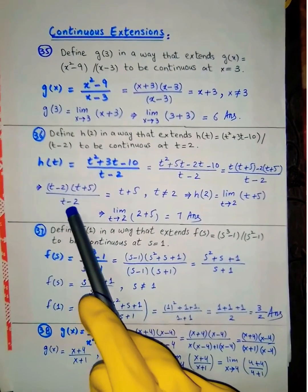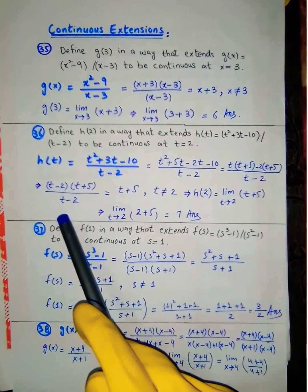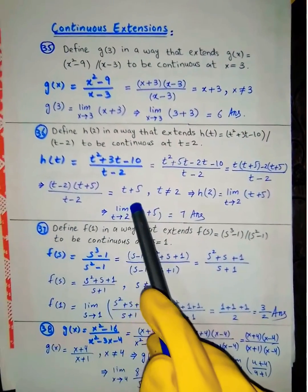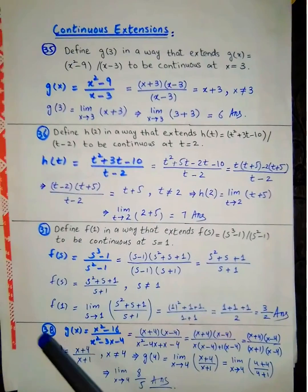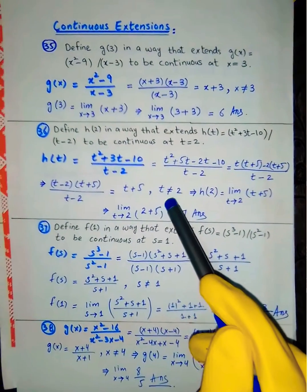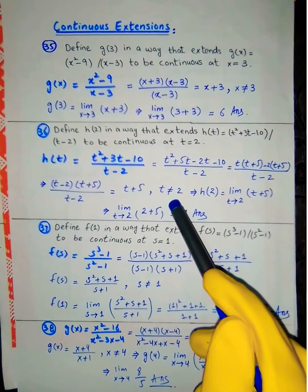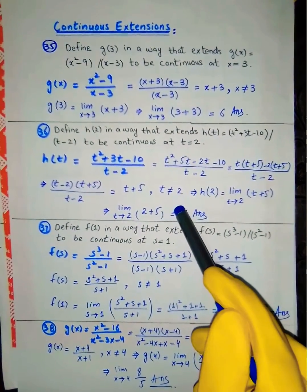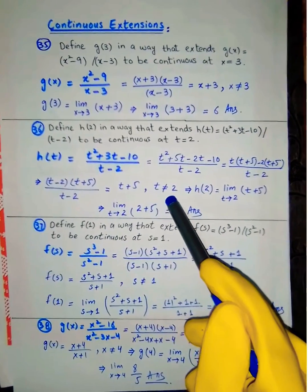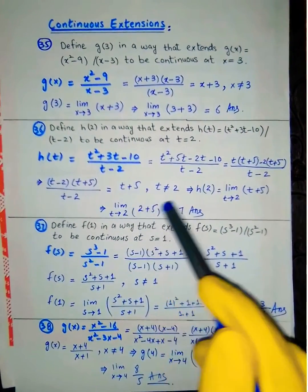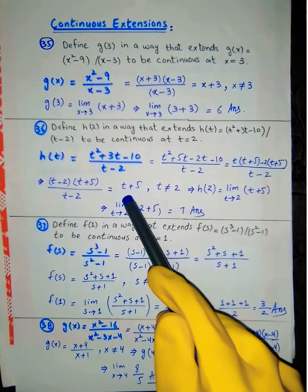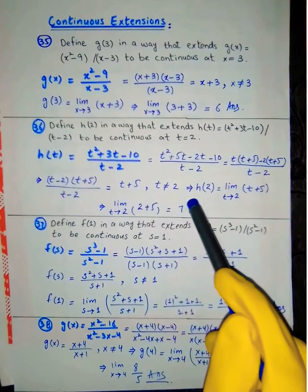The factor (t - 2) cancels out. So h(t) = t + 5, where t is not equal to 2.